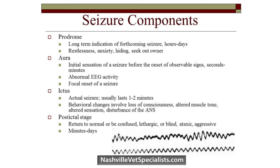There are four main components of a seizure. The prodrome can last for quite a long time — even several days — though not all animals show this. The aura is the very beginning of the seizure and can be very brief; it's not always recognized by owners. The ictus is the seizure itself. Then we have the post-ictal phase, which can last from just a few minutes to sometimes even days.